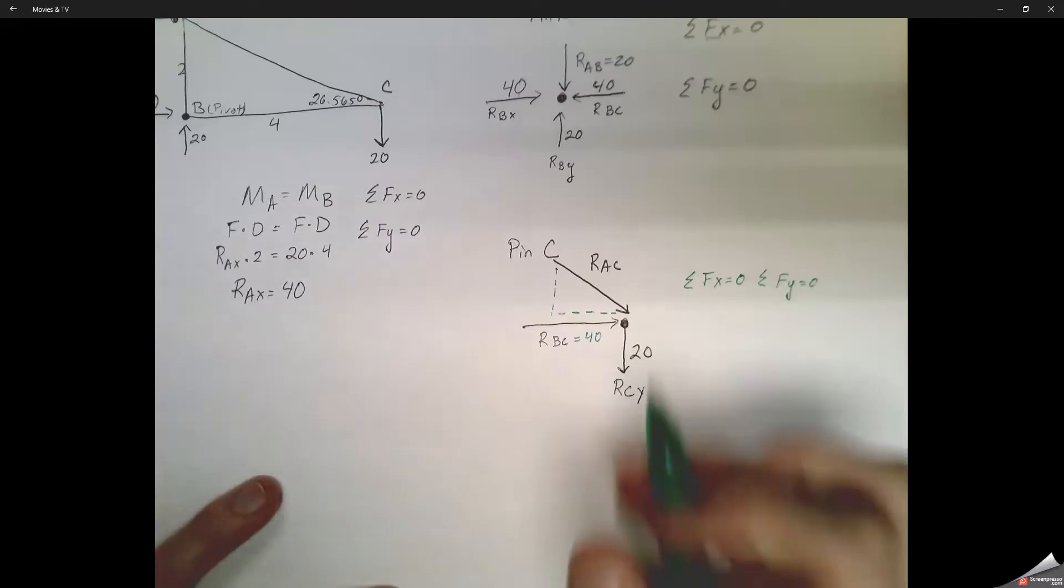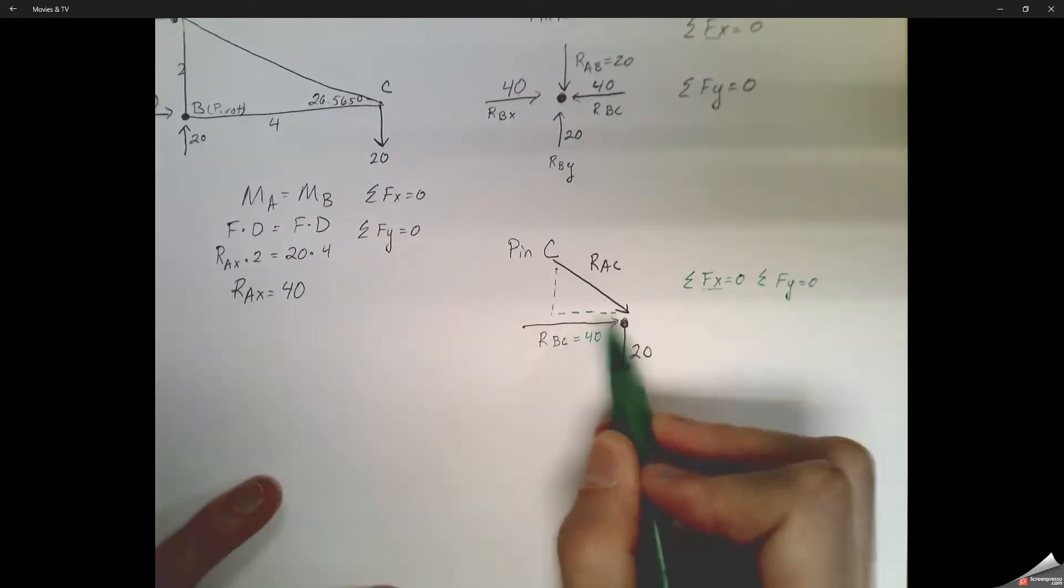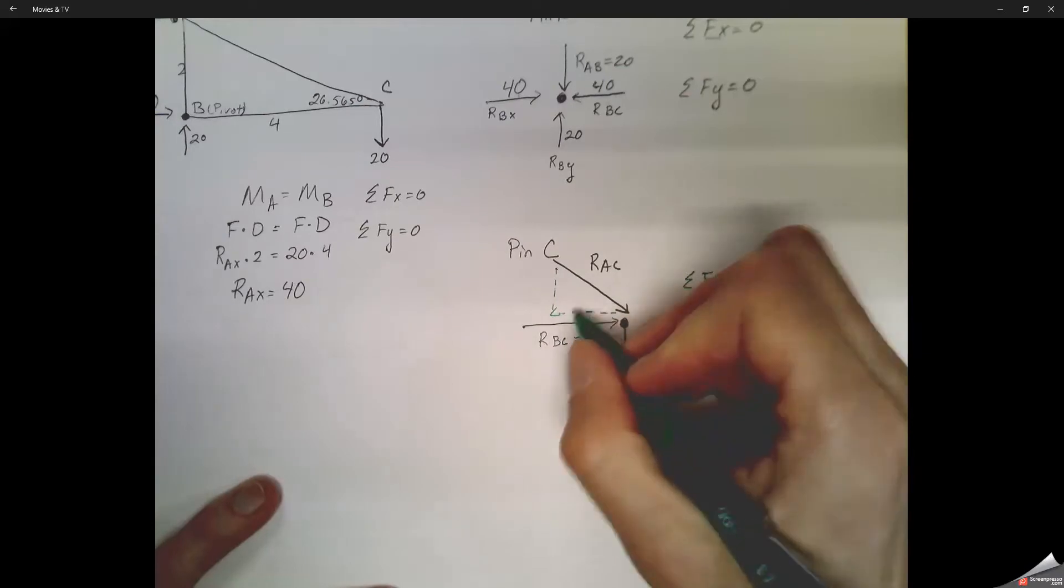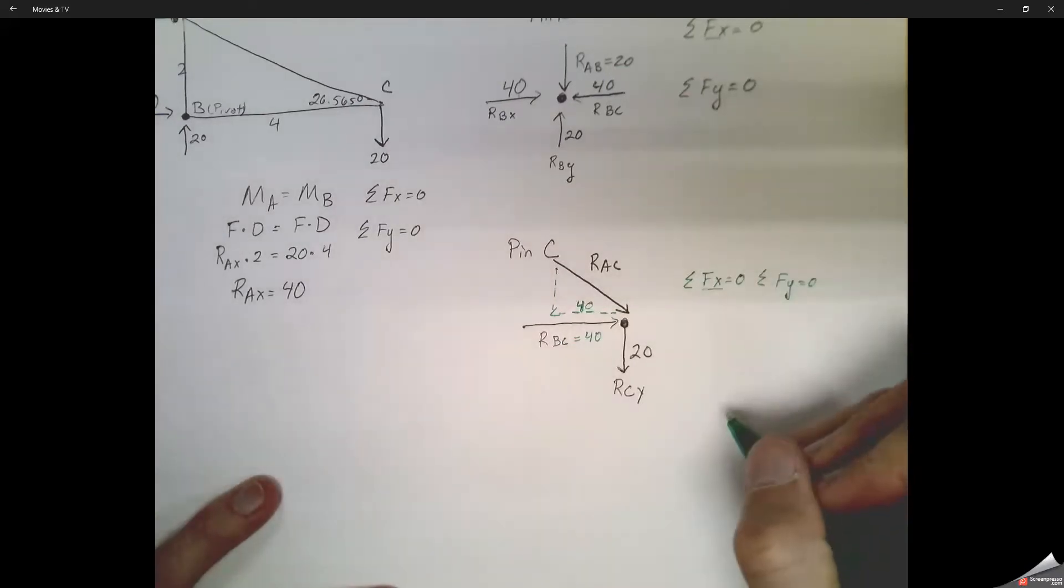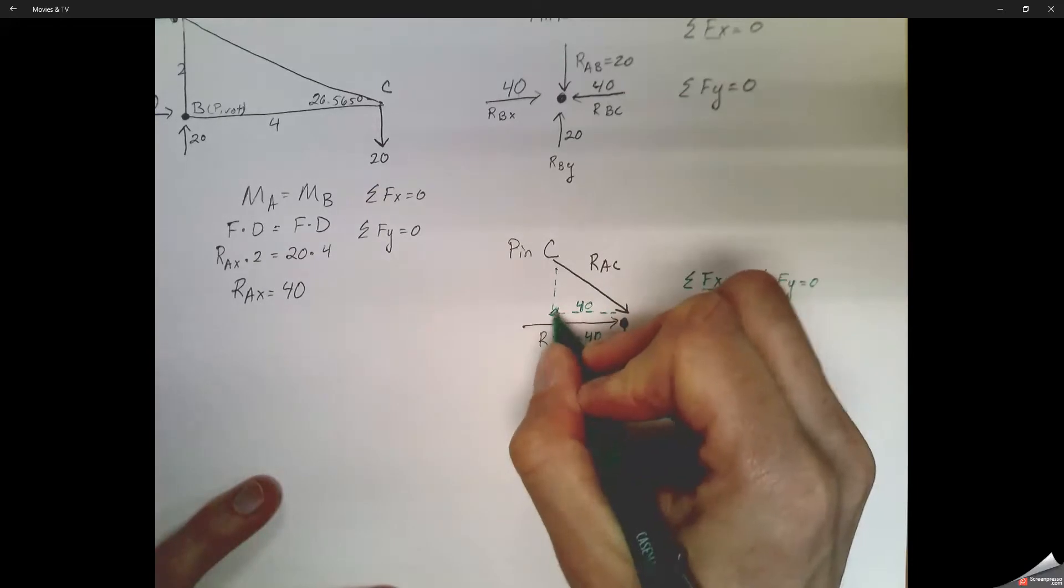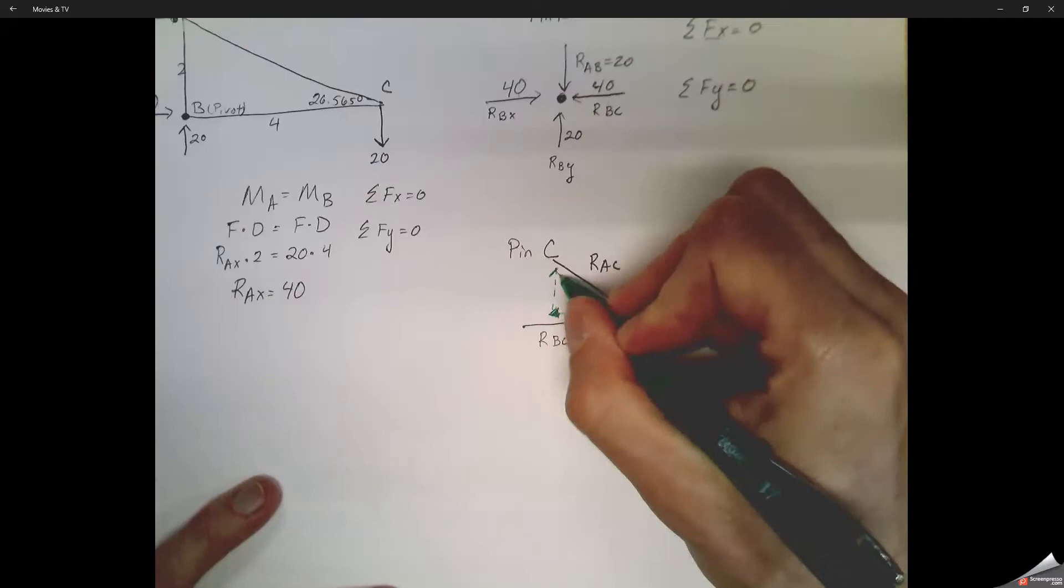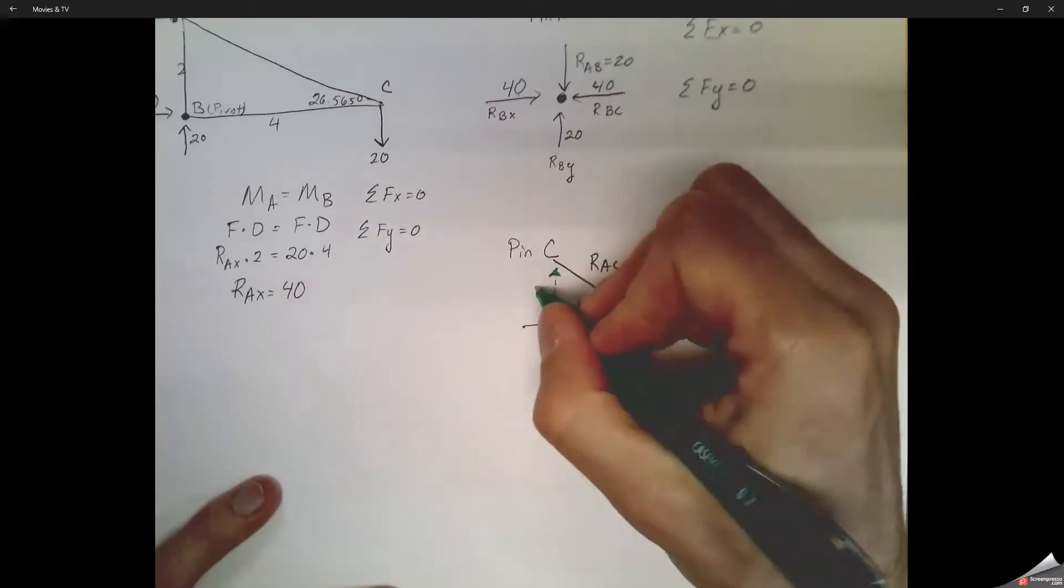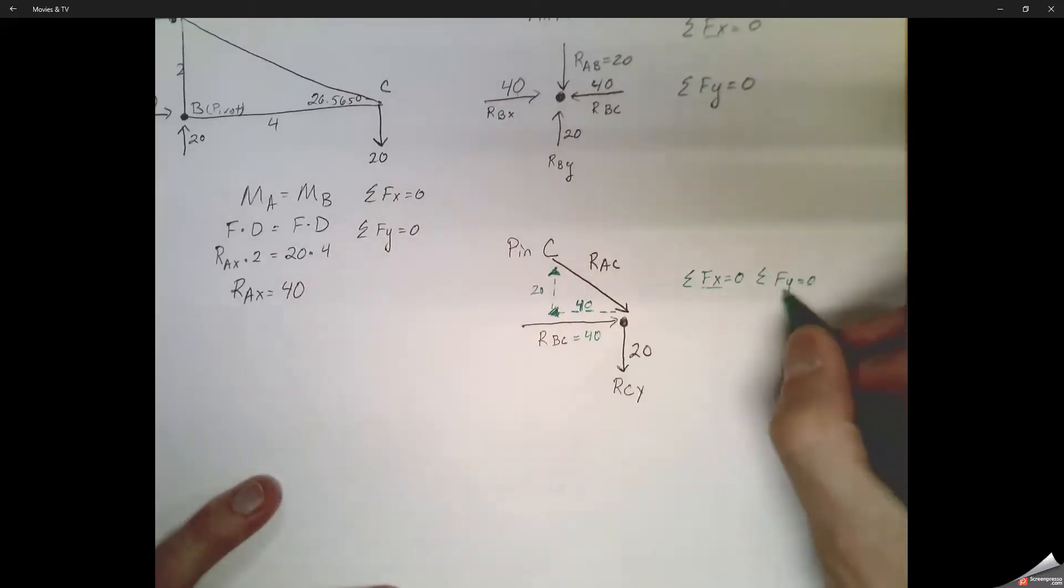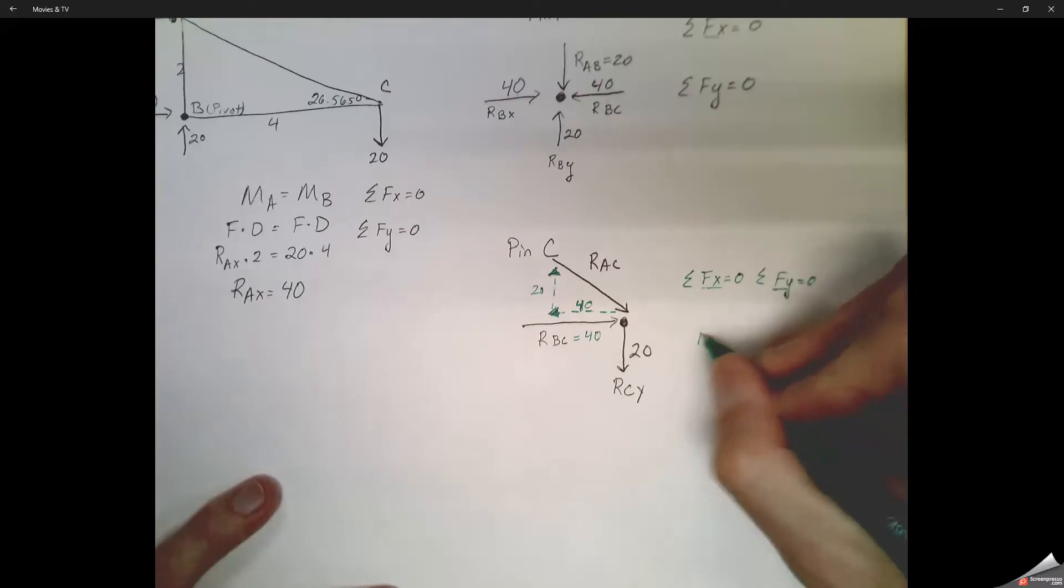So let's look at all the sum of the forces in the X. We know that the member of BC is 40 compression, which means then the X value of AC needs to be 40 in tension, pulling away. So then we look at the sum of all the forces in the Y. We need the original force is pulling 20 down. So to make everything equal, that Y component of AC needs to be 20 up.